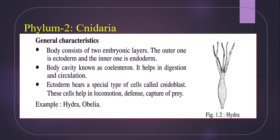General characteristics of Cnidaria: number one, the body consists of two embryonic layers. What are embryonic layers? In their embryonic condition, most of these animals have two or three layers, which are called embryonic layers. In Cnidaria, the body consists of two embryonic layers — the outer one is the ectoderm and the inner one is the endoderm.